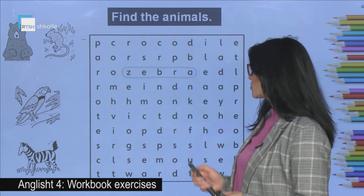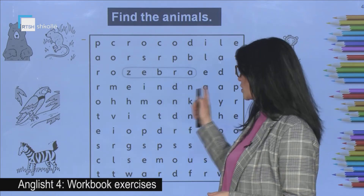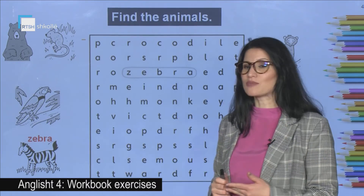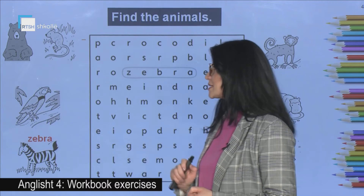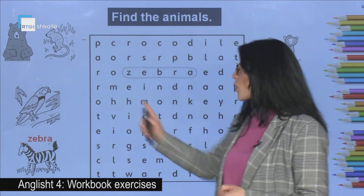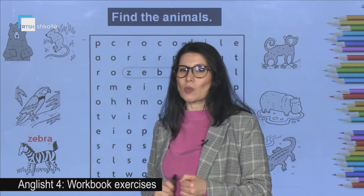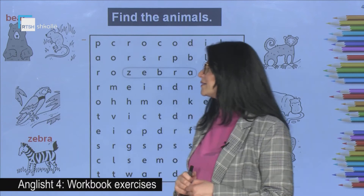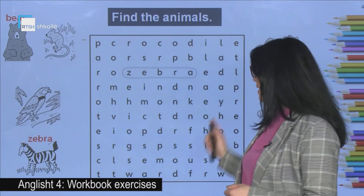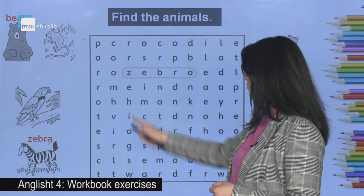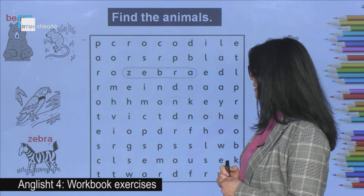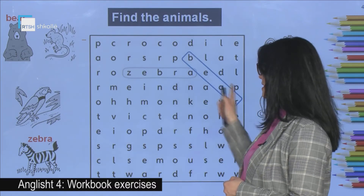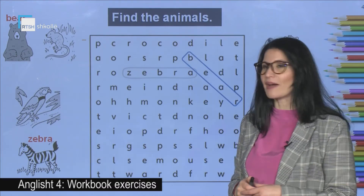The first one is already done. We have got here the zebra. What do you see here? It's the bear. And can you find the bear here? It is here — the word bear.